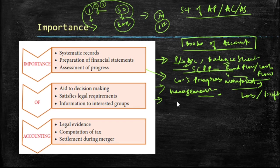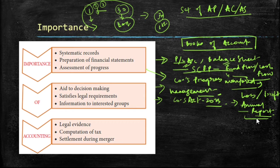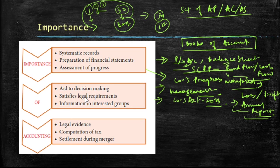Apart from this, accounting has certain legal requirements. As per the Companies Act 2013, all companies registered under the Companies Act need to maintain an annual report and publish it publicly each year. This communicates the operations of the business to shareholders and the general public. There are also requirements related to taxation and TDS, as well as employees' provident fund, to name a few. This information is passed on to the interested groups.